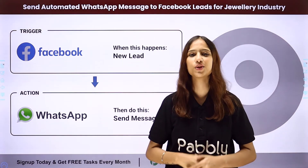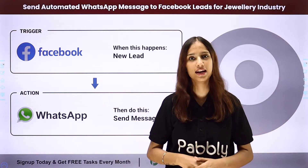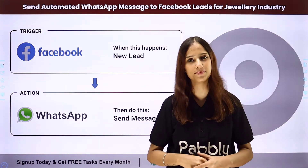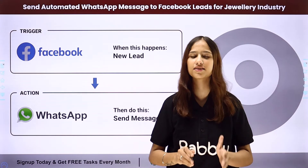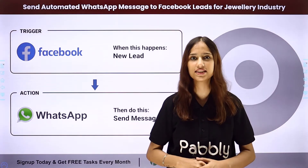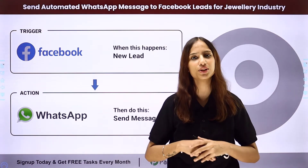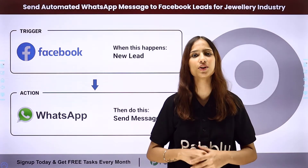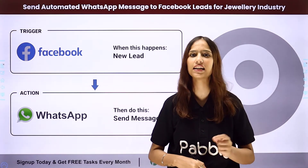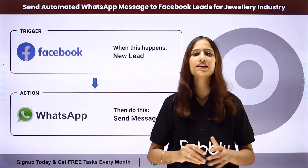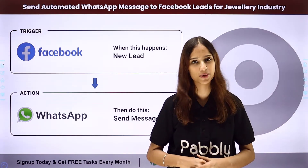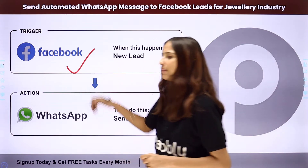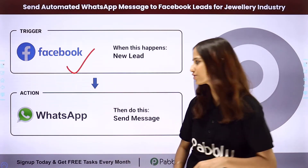Let's assume that I have a jewelry store, and as this is a festive season, I wish to send an automated WhatsApp message to my customers. My objective is that whenever I receive a new lead through Facebook lead ads, I want to send an automated WhatsApp message to that lead. To build this integration I will be using Pabbly Connect, where my trigger application will be Facebook and my action application will be WhatsApp.